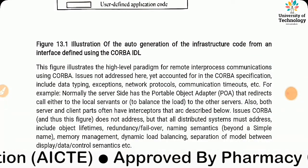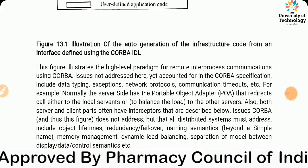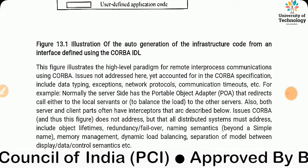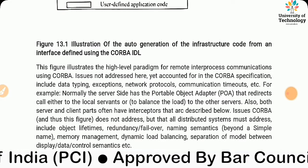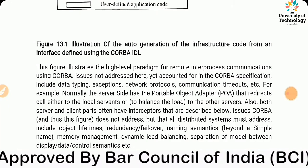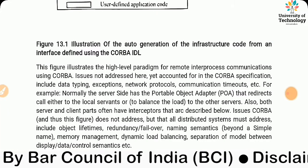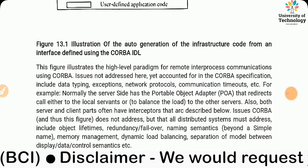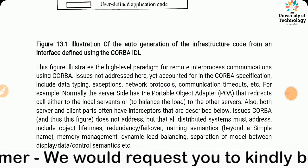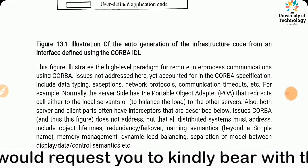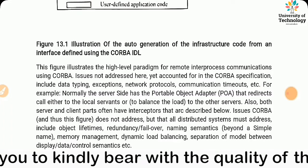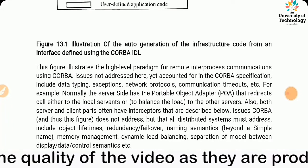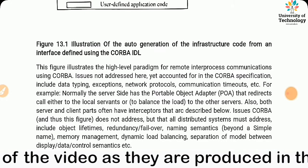This figure illustrates the high-level paradigm for remote inter-process communication using CORBA. Issues not addressed here — but accounted for in the CORBA specification — include data typing, exception, network protocols, communication timeouts, etc. Normally the server side has a Portable Object Adapter that redirects calls either to the local servants or to other servers. Both servers and client parts often have interceptors.